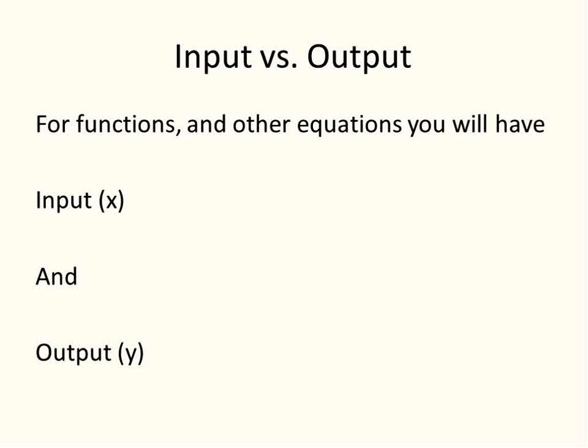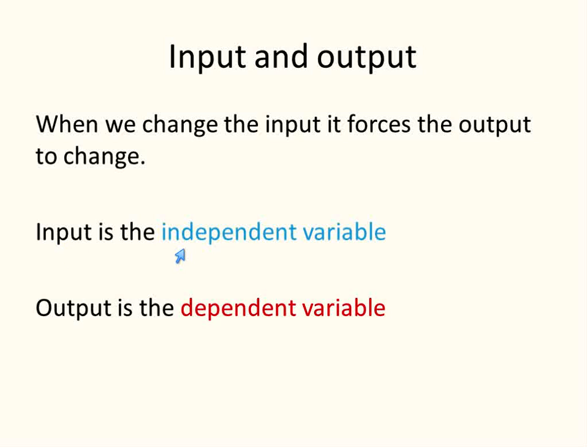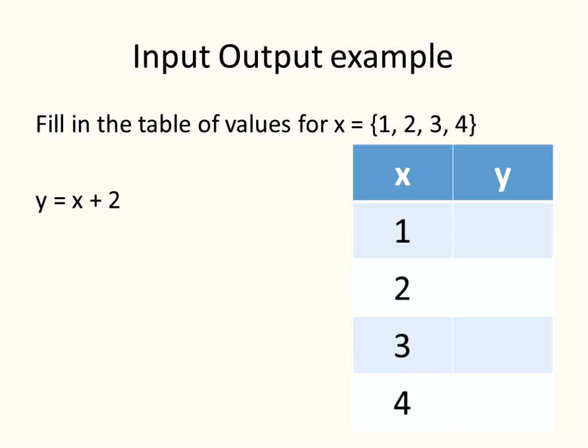Another way of looking at this is input versus output. For functions and other types of equations, you sometimes have an input, often, usually, most of the time, is your x value, and your output is your y value. Again, for functions, this definitely works. For other equations, it sometimes works. You have an input and then a necessary output. You change your input, and it impacts your output. Your input is independent. The output is the dependent variable.